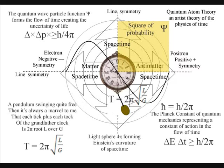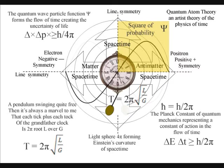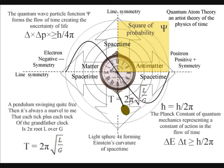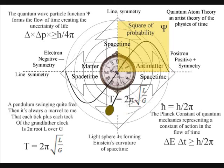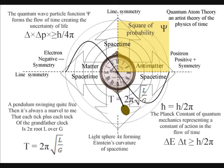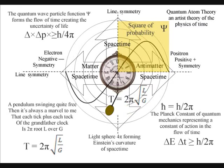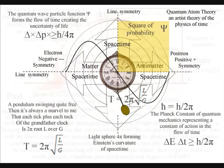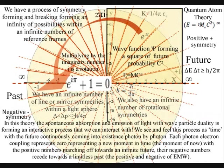Also, we see Heisenberg's uncertainty principle reformulated with energy and time, with two pi representing the timeline instead of four pi representing three-dimensional space. Note also that the oscillating wave represents harmonic motion, and the equation representing the movement of the pendulum is typical of equations representing the movement of objects — with two pi representing a universal process of spherical symmetry forming and breaking that we see and feel as the flow of time.